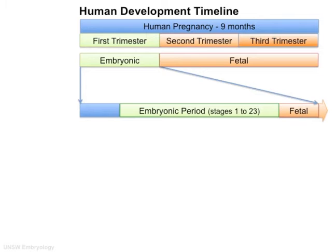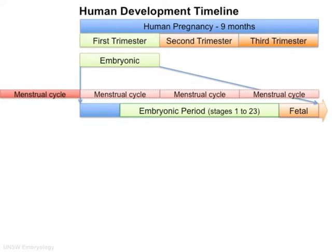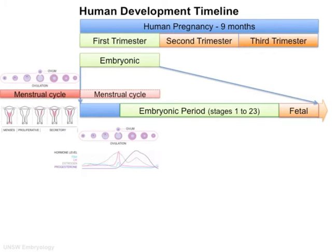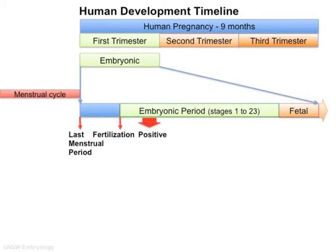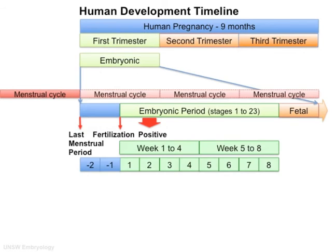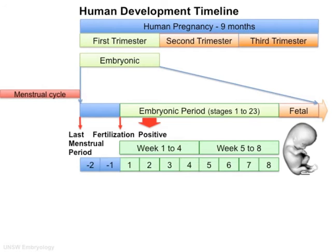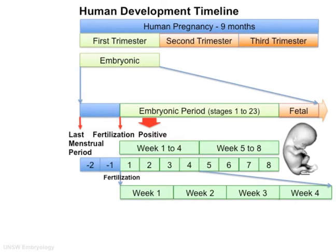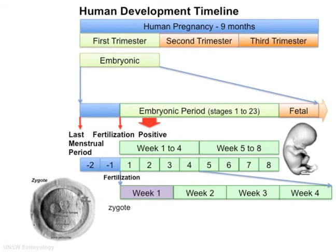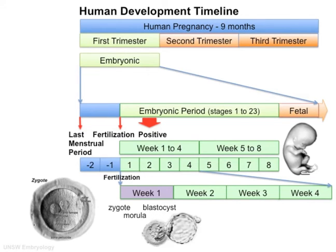The embryonic period is divided into 23 stages over the first eight weeks, and after the last menstrual cycle this period covers the next two and a half missed cycles. A positive pregnancy test can be seen two weeks after fertilization, and the fertilized egg is called a zygote. This divides to form a morula. Further mitotic division forms a blastocyst, forming a bilaminar and then a trilaminar embryo in week three.